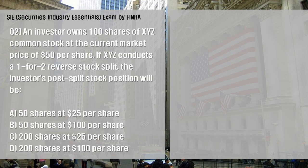An investor owns 100 shares of XYZ common stock at the current market price of $50 per share. If XYZ conducts a 1-for-2 reverse stock split, the investor's post-split stock position will be: A: 50 shares at $25 per share; B: 50 shares at $100 per share; C: 200 shares at $25 per share.